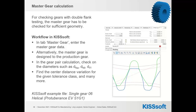As a next topic, master gear calculation is possible in KISSoft. Master gear checking or double flank checking is still applied as a productive way of gear inspection. For this purpose, you need to have the master gear and make sure it will have no interference with the production gear, but is capable of checking the active flank of the production gear. Of course, you try to use the master gear for as many production gears as possible to have easier handling in your inspection process.